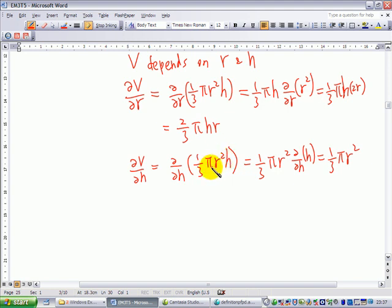Pull out the constant one-third pi R squared as you do differentiation, and now you differentiate H with respect to H, which will leave you 1. Therefore, dV/dH eventually equals one-third pi R squared.